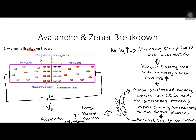Now let's understand how avalanche breakdown takes place. This is a lightly doped junction with a wider depletion layer under reverse bias. Due to reverse bias, minority charge carriers — electrons in P-side and holes in N-side — are accelerated towards the junction. Due to acceleration, the kinetic energy associated with these minority charge carriers increases. When these minority charge carriers with high kinetic energy collide with stationary atoms, they impart some of their kinetic energy to the valence electrons of those stationary atoms.